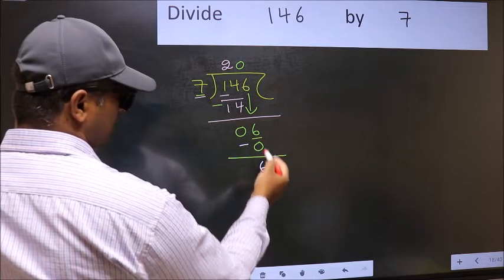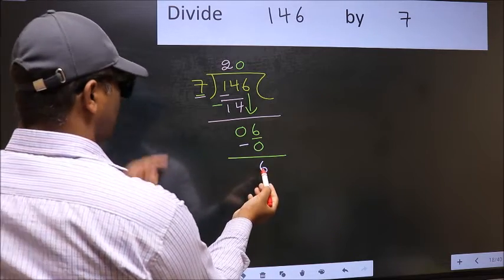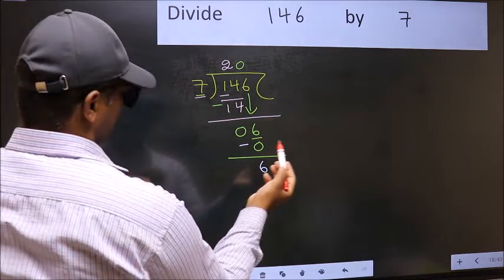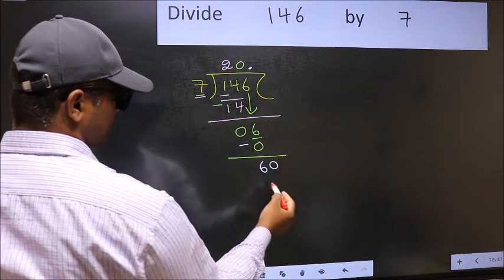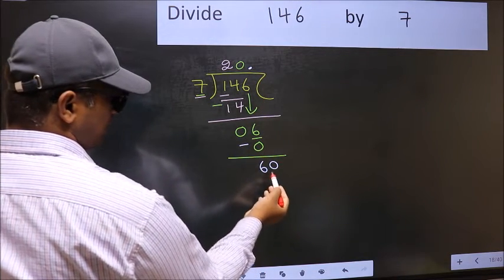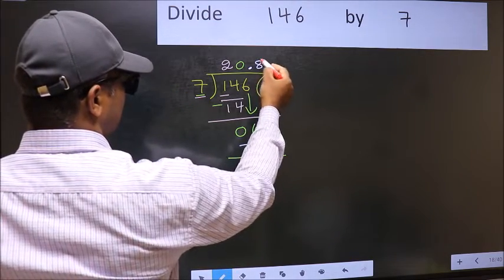Over here, we did not bring any number down, and 6 is smaller than 7. So now you can put the dot and take 0, making it 60. A number close to 60 in the 7 table is 7 times 8 equals 56.